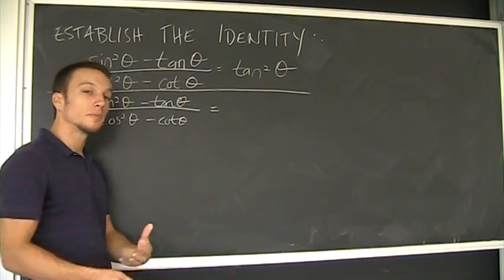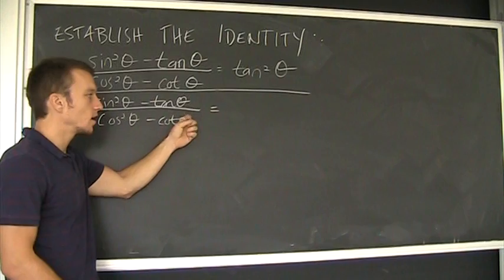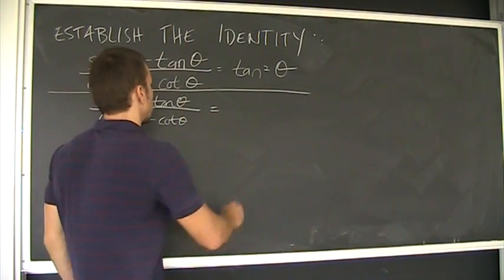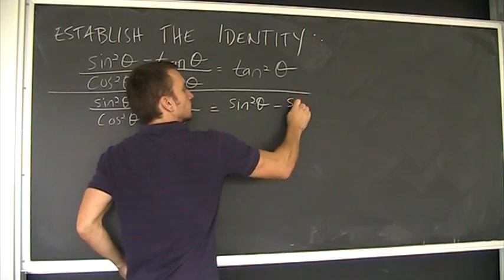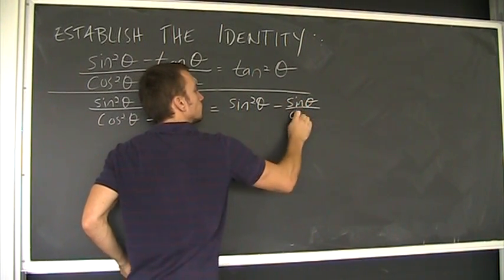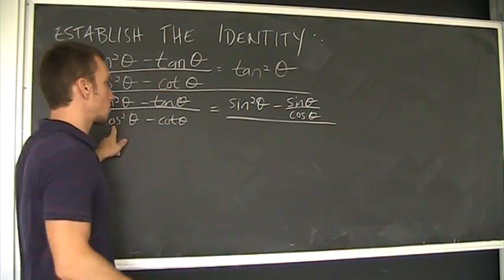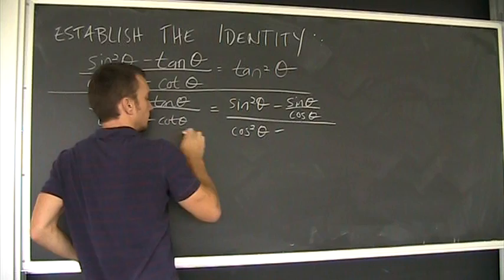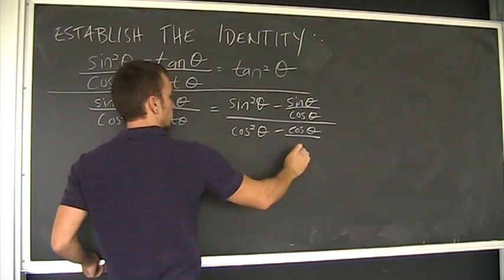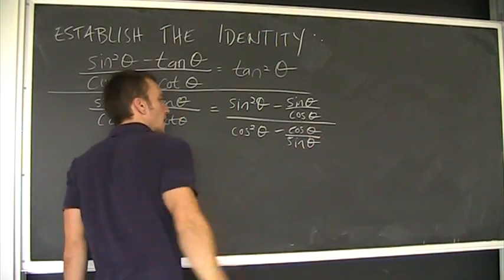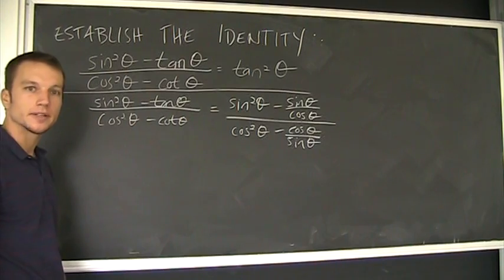So either way might get you, ultimately in the end, to tan squared. So I'm just going to try and start with those guys and see what happens. Cosine squared theta did not change. Doesn't look any better, but that's the first step of this.